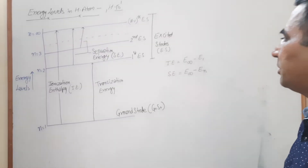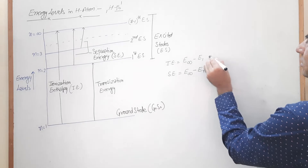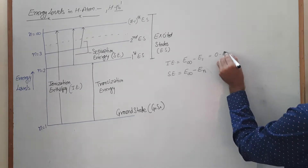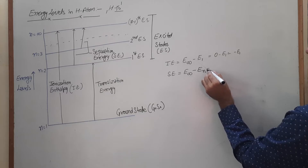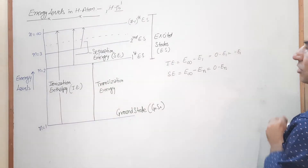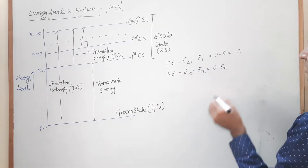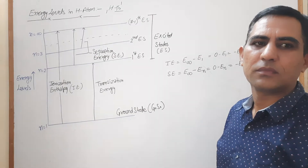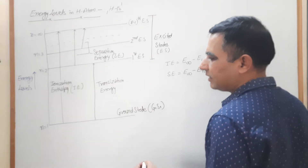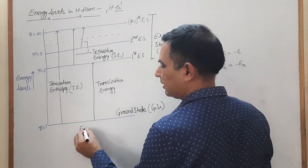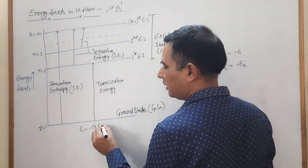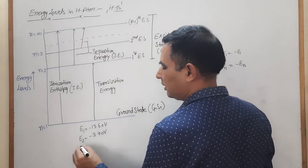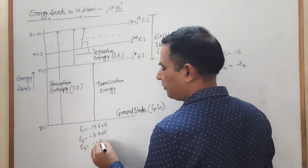At the infinite level of orbit the energy is zero. So the ionization enthalpy formula simplifies to minus E1, and the separation energy simplifies to minus E-n. The energy values are: first energy level: minus 13.6 eV; second energy level: minus 3.4 eV; third energy level: minus 1.51 eV.